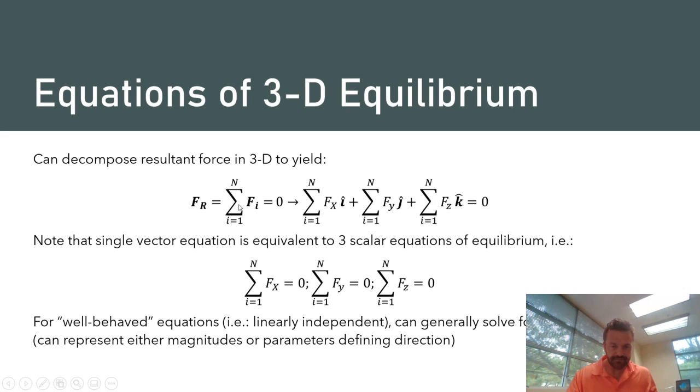If you have a three-dimensional force, then in order for that resultant force to be zero, each of its components has to be zero, which gives us three scalar equations. If they're linearly independent, we can use them to solve for three different unknowns. Recall that those unknowns might represent the magnitudes of the forces, or additional parameters describing their directions, or like the spring-based example we worked, some other parameter of interest like a spring displacement.